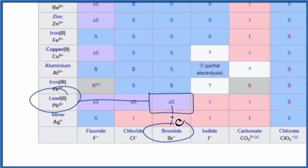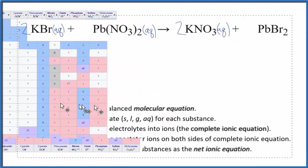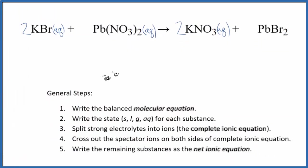For net ionic equations, we consider slightly soluble to be the same thing as being a solid. So this is insoluble, it'll be a solid, and in fact it'll be a precipitate. These two substances react, and then we end up with this PbBr2 falling to the bottom of the test tube. So now we have the states.